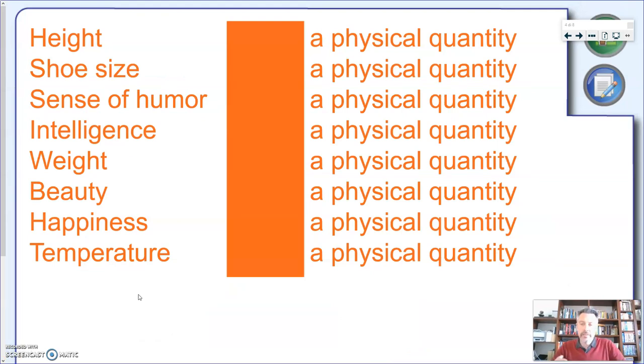And just to better understand the difference between things which are physical quantities and things which are not physical quantities, let's make again a list of the things we can say about the person I showed you before. So the height, the shoe size, sense of humor, intelligence, weight, beauty, happiness, temperature. And I want you just to pause this video for a minute and just think by yourself, which one is which? Again, the main point is: can you measure it? Is there a way that I can say this quantity has a value, a number, something that I can measure?